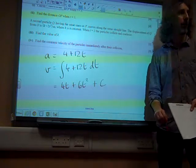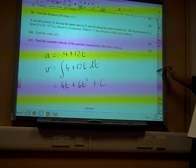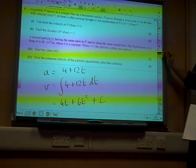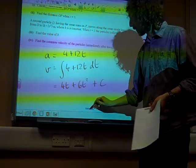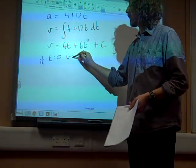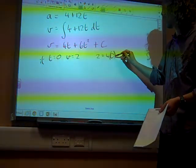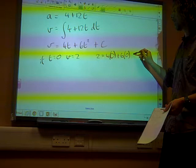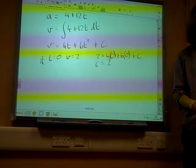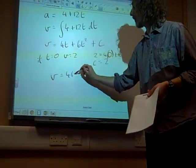And we have to put in our constant of integration. And that becomes important now because the question said when it passed through that point the velocity was 2. So if t equals 0, v equals 2. So 2 is 4 times 0 plus 6 times 0 plus c. So we get c is 2 out of that.